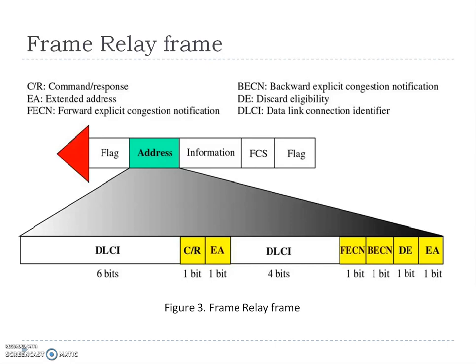The EA (Extended Address) bit indicates whether the current byte is the final byte of the address. If EA equals 0, another address byte follows; if EA equals 1, the current byte is the final one. The FECN (Forward Explicit Congestion Notification) bit can be set by any switch to indicate that traffic is congested. The BECN (Backward Explicit Congestion Notification) bit is set to indicate a congestion problem in the network and informs the sender that congestion has occurred. The DE (Discard Eligibility) bit indicates the priority level of the frame; if DE equals 1, it tells the network to discard this frame if there is congestion.